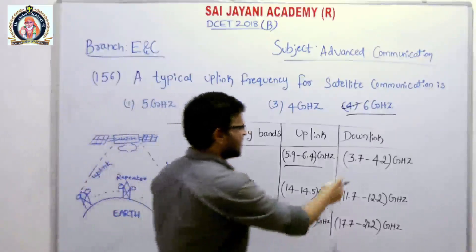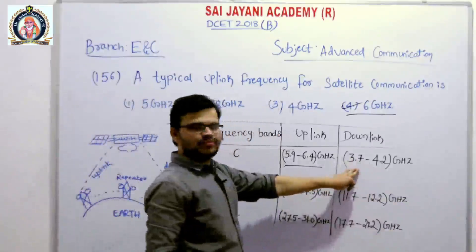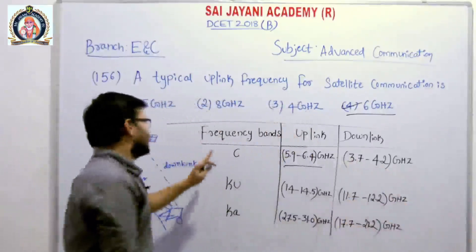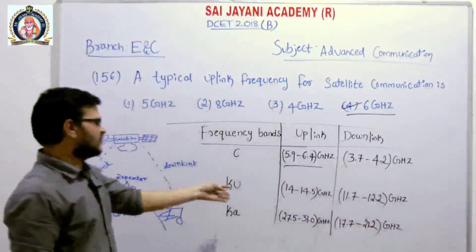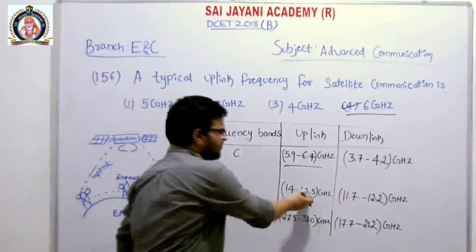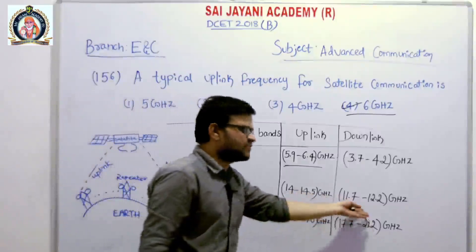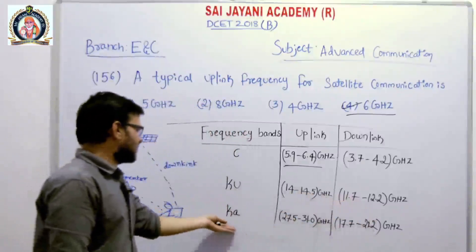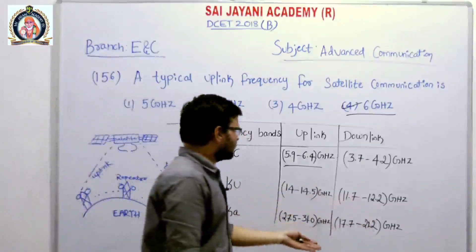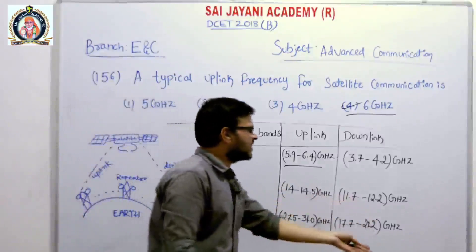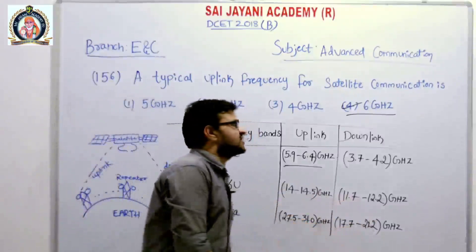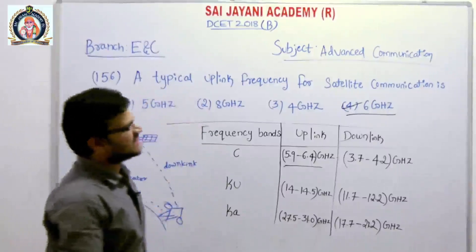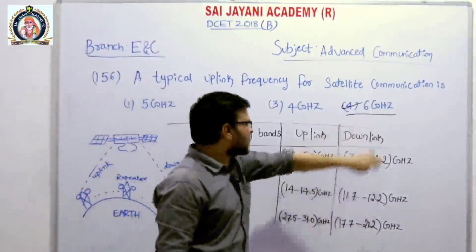The downlink frequency for C-band is 3.7 to 4.2 GHz. Similarly, other frequency bands also have their respective uplink and downlink frequencies. So a typical uplink frequency for satellite communication is 6 GHz.